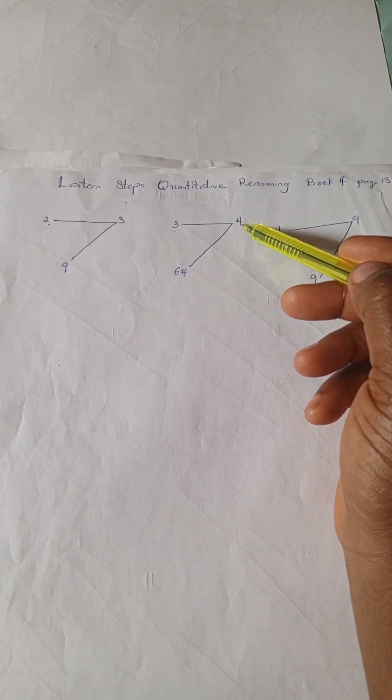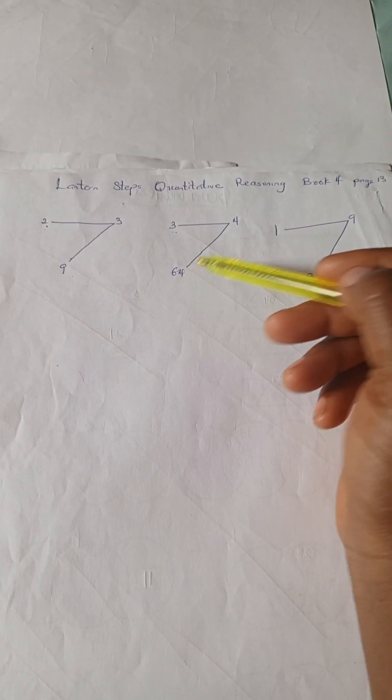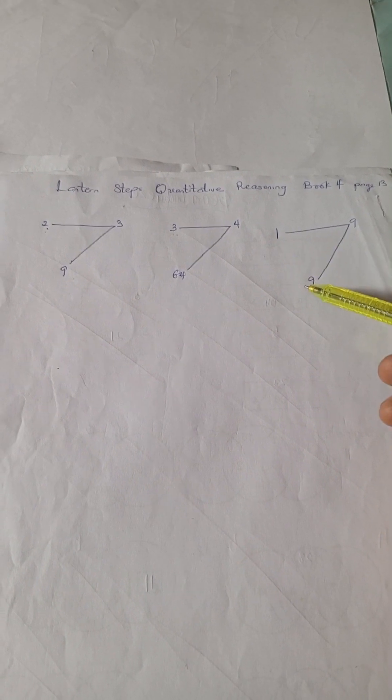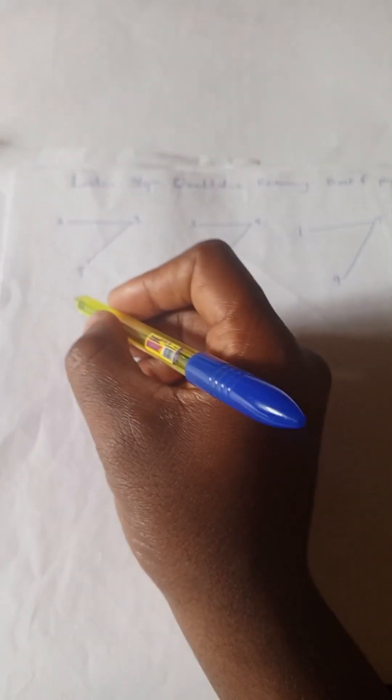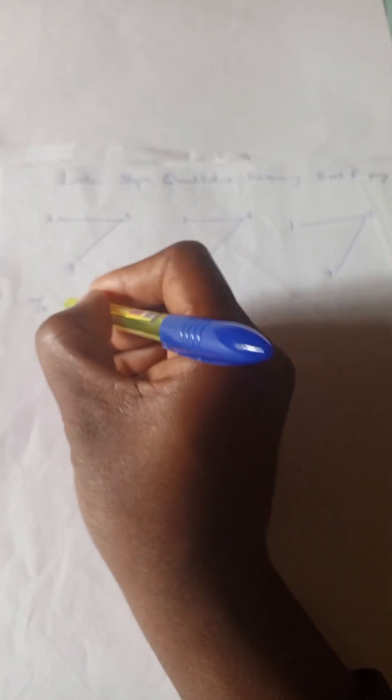Let's try this. 4 to the power of 3 represented here will give us 64 and 9 to the power of 1 will give us 9. So let us use this to solve.